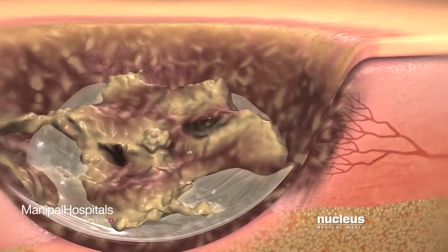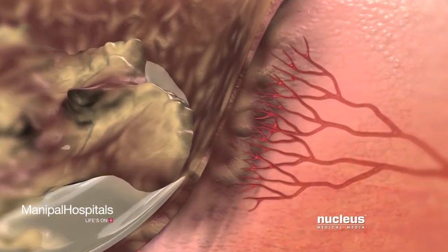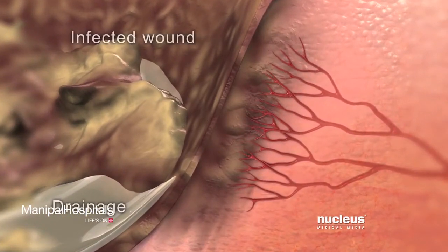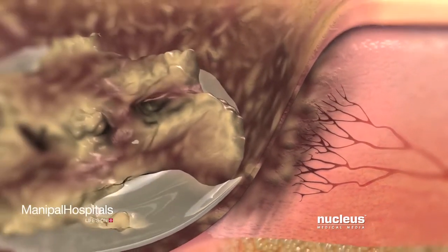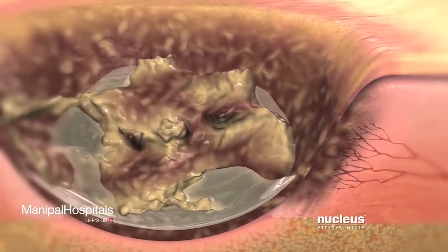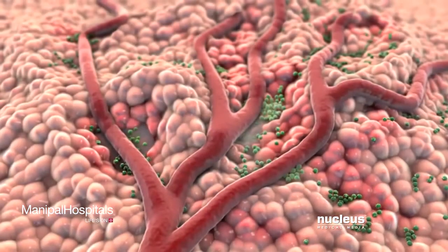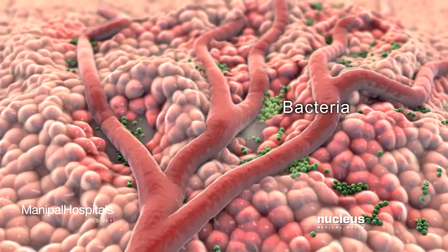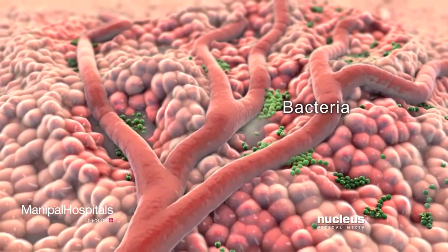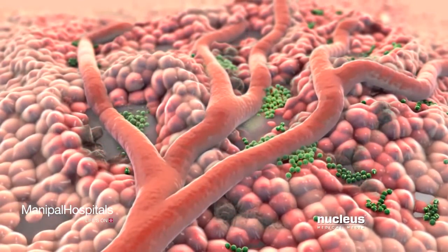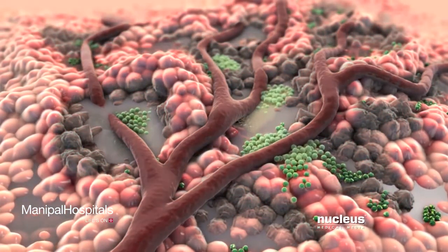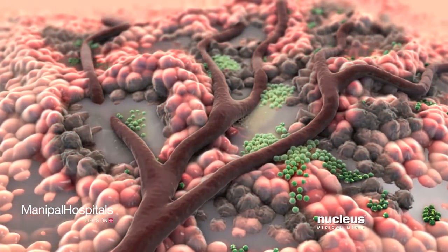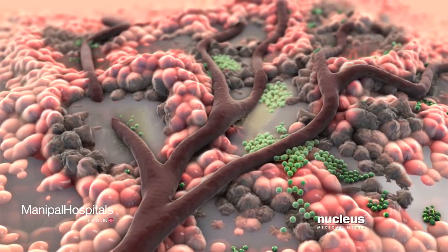Dead, damaged, or contaminated tissue can compromise circulation to your wound. In addition, the unhealthy tissues are prone to infection. Dead tissues invite bacteria to grow, which compete with growing cells for nutrients and interfere with the healing process. The wound's healthy tissues may become infected.